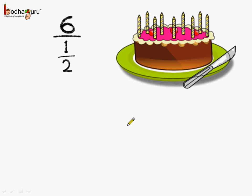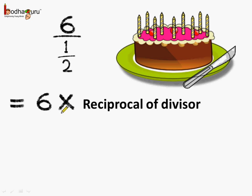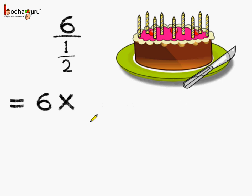Now coming back to our example of the cake. In the cake problem we did 6 divided by half, which means 6 multiplied by the reciprocal of the divisor. Here the divisor is half, so what is the reciprocal of half? It is equal to 2. So we get the answer as 6 into 2, which is equal to 12.